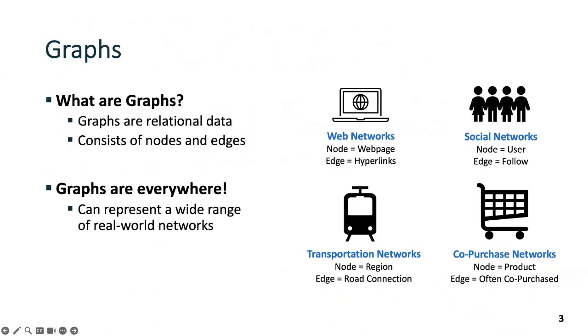I'll start with an introduction. Graphs are everywhere. Graphs represent relational data that consists of nodes and edges. A wide range of real-world networks can be represented as graphs, including web networks, social networks, transportation networks, co-purchase networks, and more.